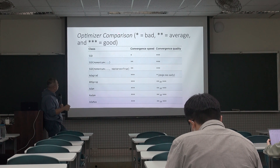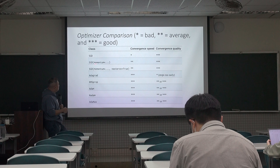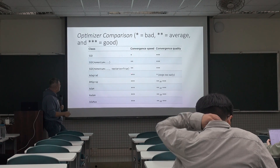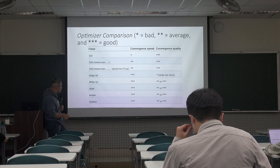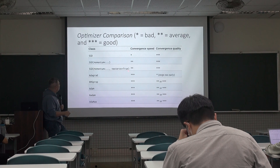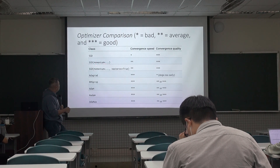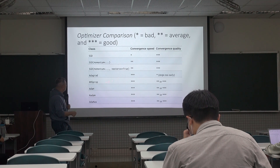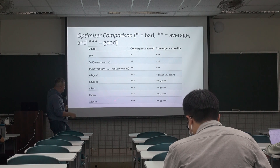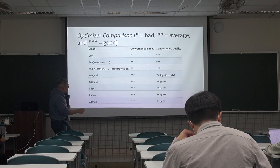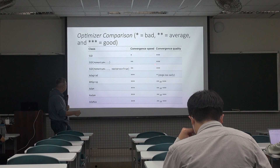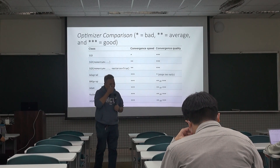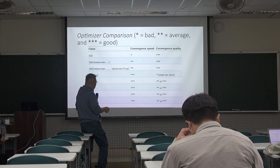All the optimizers we've covered are listed in a table along with their convergence speed. Momentum and NAG converge well but not as fast as adaptive optimizers. However, in terms of model quality after training is done, non-adaptive optimization techniques normally give you a better-performing model.